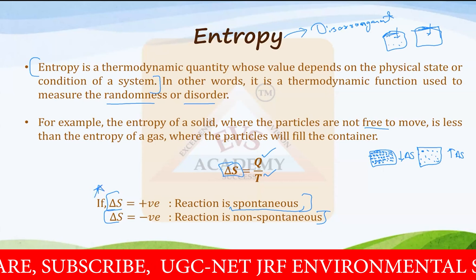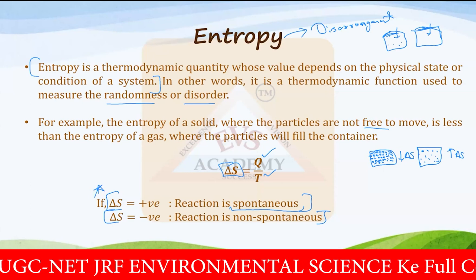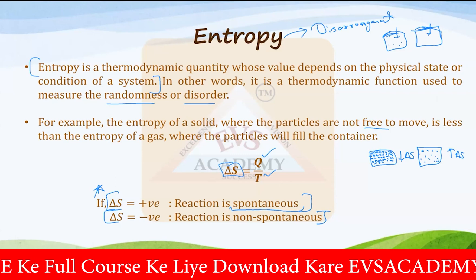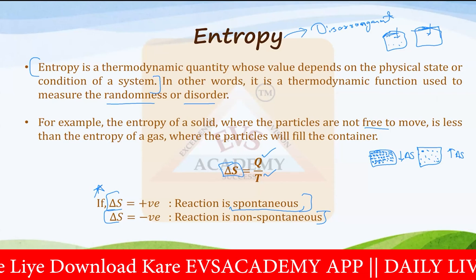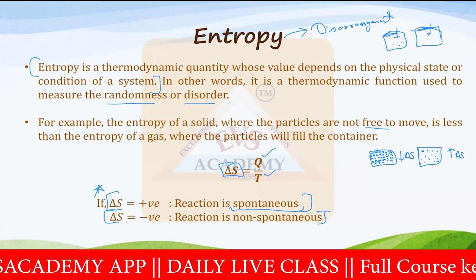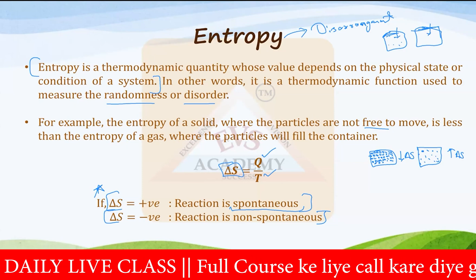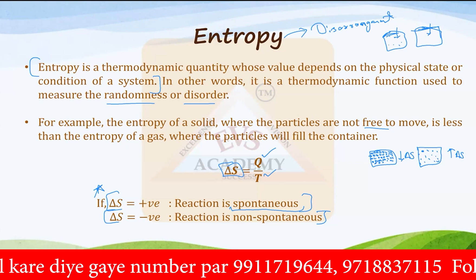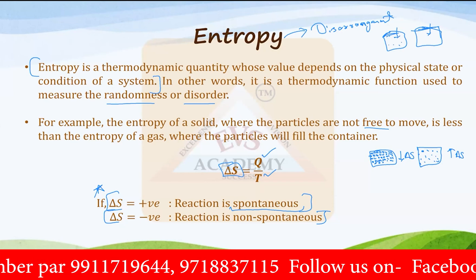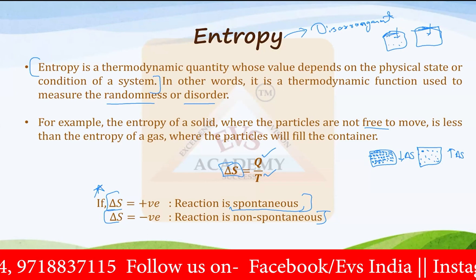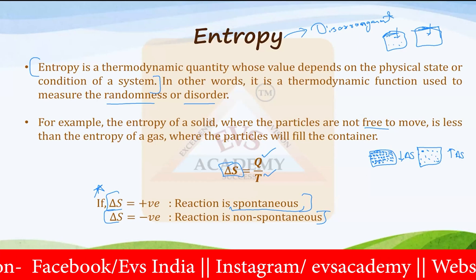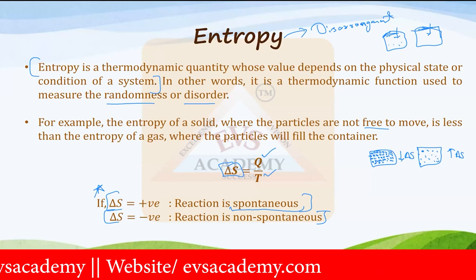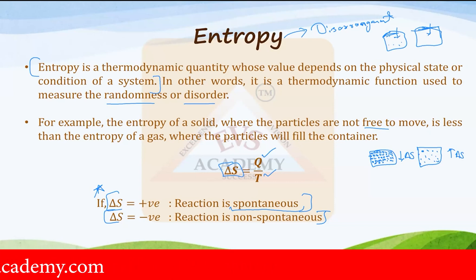If you look at the universe, all reactions are just increasing entropy in the very long run — there is no decrease in entropy. With each reaction, there would be an increase in entropy always in the whole universe. If you look at the Big Bang theory as well, all the galaxies are moving far apart from each other, so the entropy of the universe is constantly increasing. Randomness is constantly increasing, and the universe's entropy will continue to increase till the end of the universe.